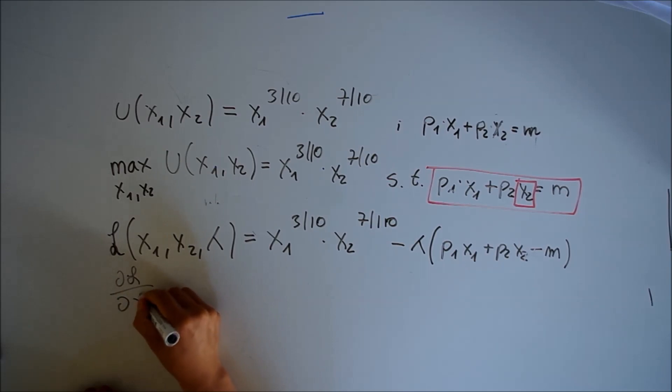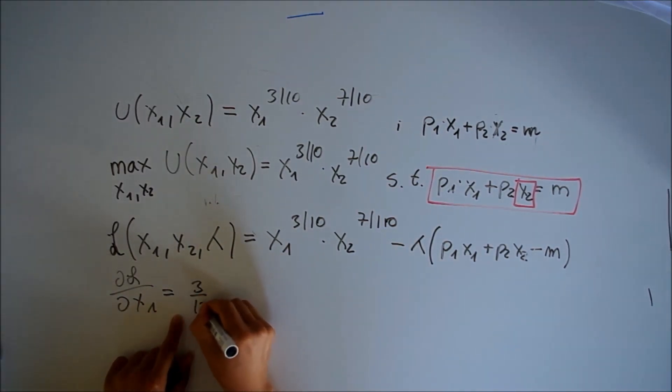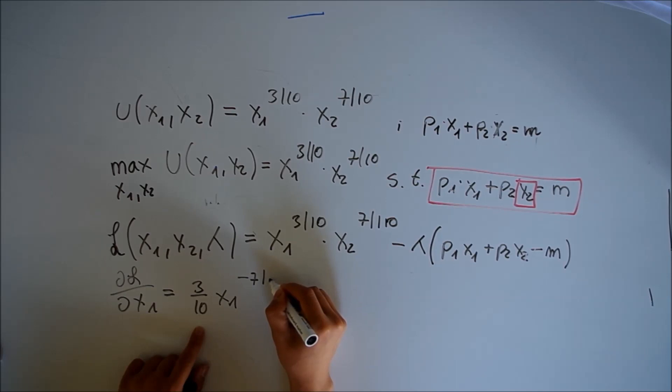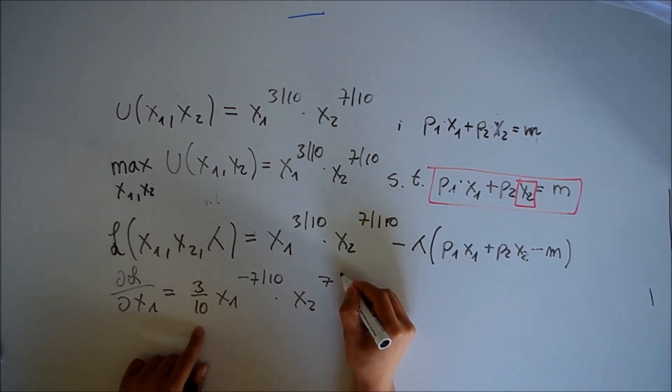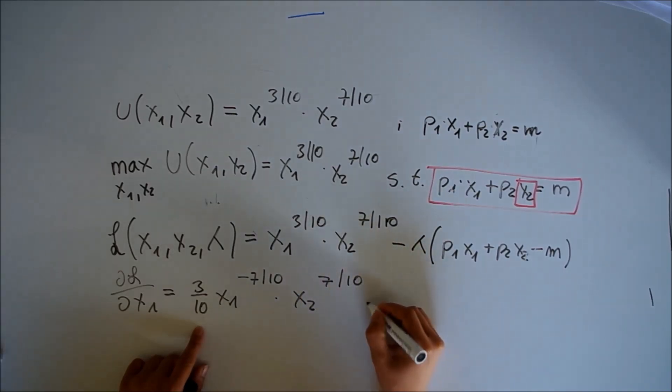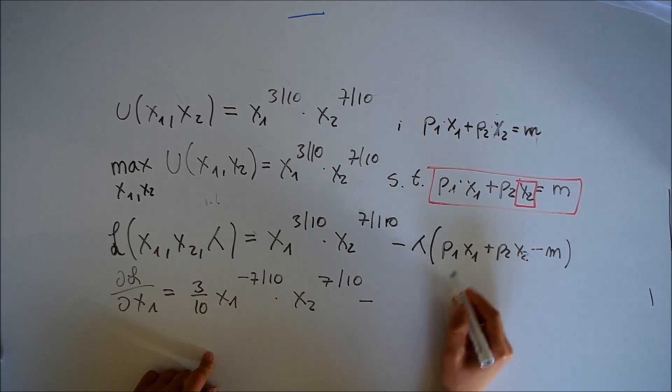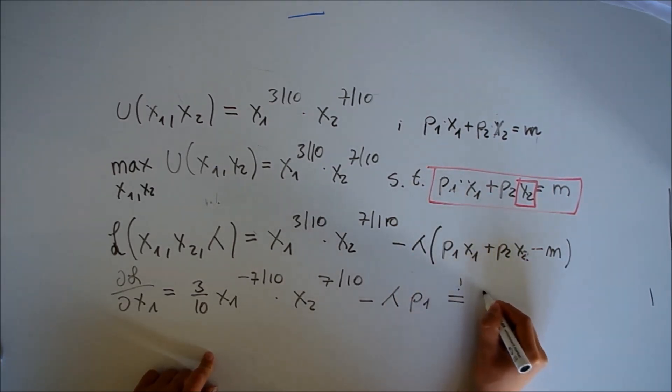The first partial derivative with respect to x1 is ∂L/∂x1 = (3/10)*x1^(-7/10)*x2^(7/10) - λp1 = 0.